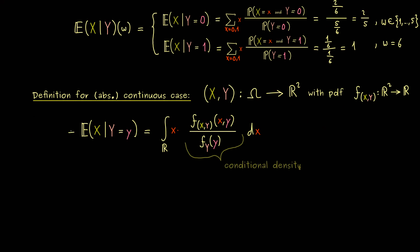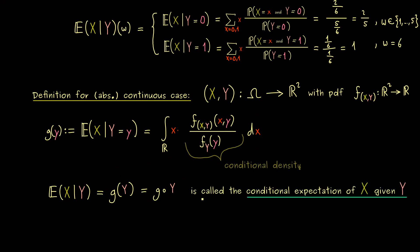The fraction — joint density divided by marginal density of Y — is called the conditional density. So the setup works exactly like in the discrete case; we just substitute sums with integrals. We get a new function, now called g(y), and to obtain the new random variable we compose g with Y, writing g(Y). Since g is well defined via the one-dimensional integral, this gives a new random variable from Ω into ℝ — the conditional expectation of X given the random variable Y.